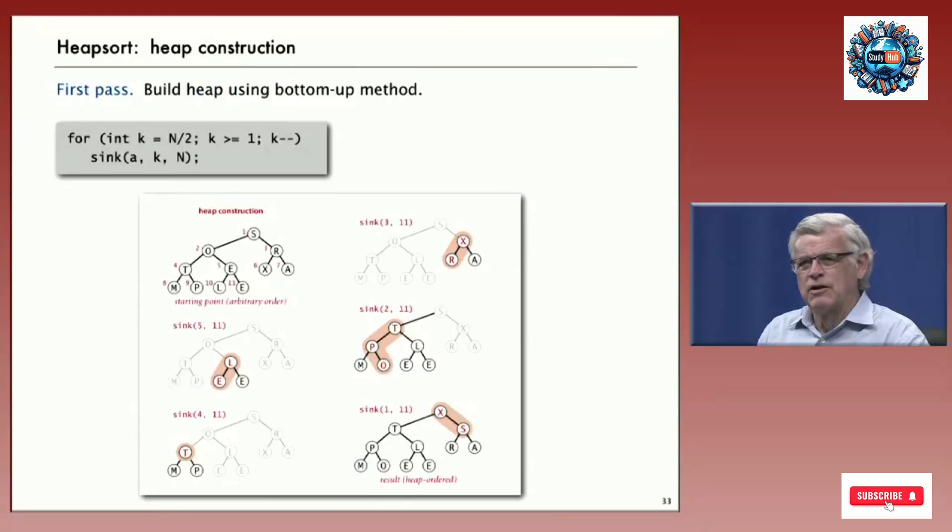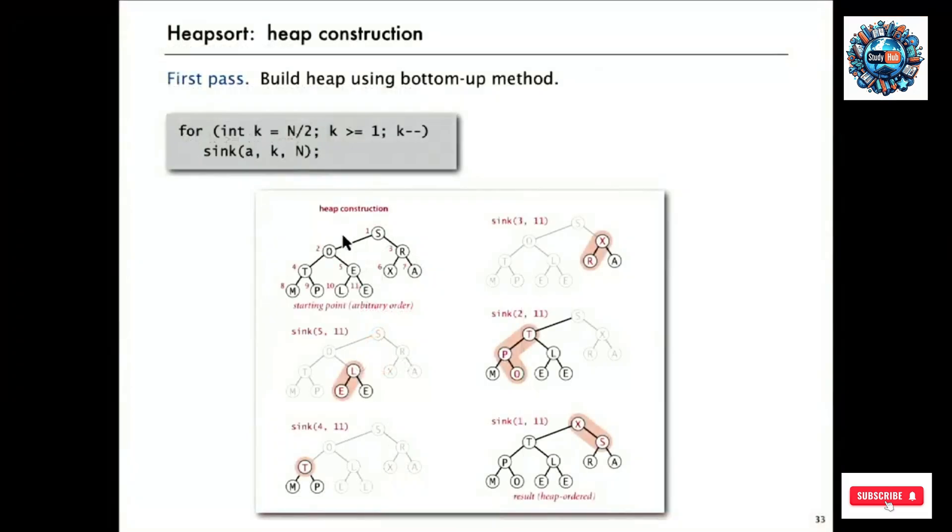This slide summarizes the code for heap construction. And as you can see, it's a one-liner. We go backwards through the heap, starting at N over two because the N over half of the rightmost half of the array is just a little heaps of size one. We just go backwards doing a sync starting at K. So that's the first piece of code for heap ordering an array with arbitrary values. And then these diagrams summarize the sync calls that we just went through in the demo starting at five, four, three, two, one. As you can see, only one, two, three, four, five exchanges are needed to bring this into heap ordering.